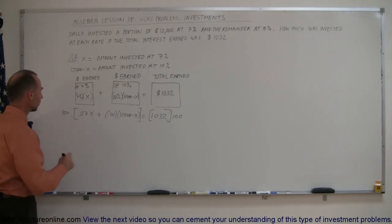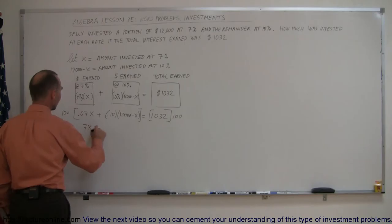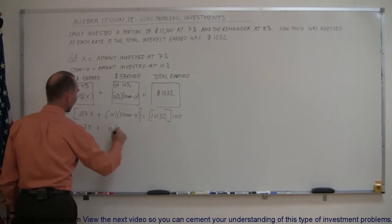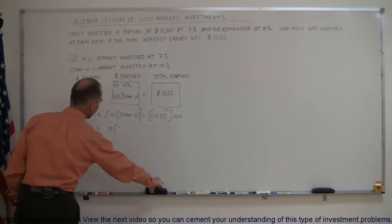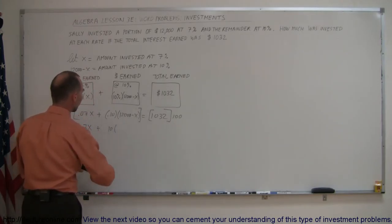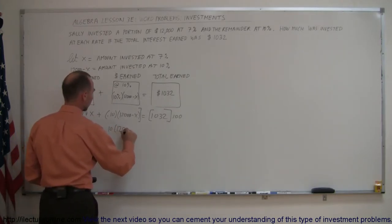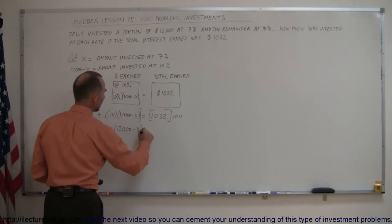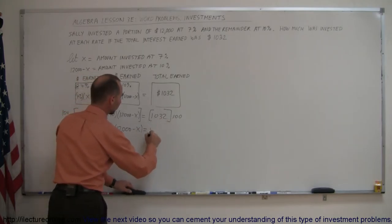100 times 0.07 is 7x, plus 100 times 0.1 is 10, times (12,000 minus x), equals 100 times this, which is 103,200.